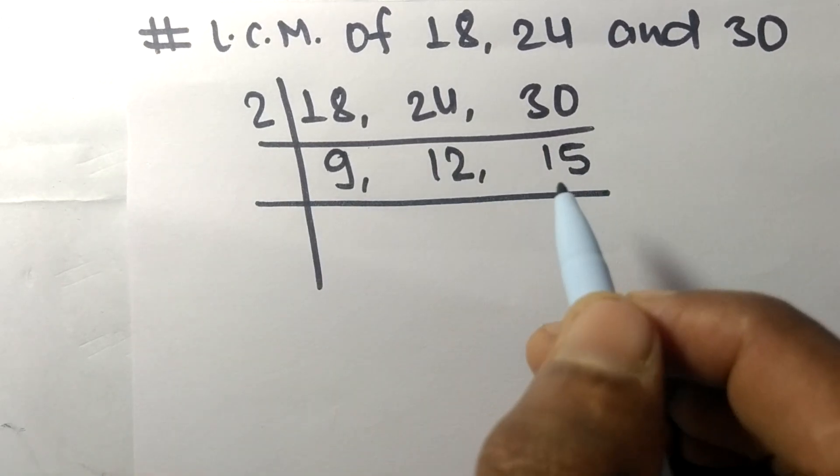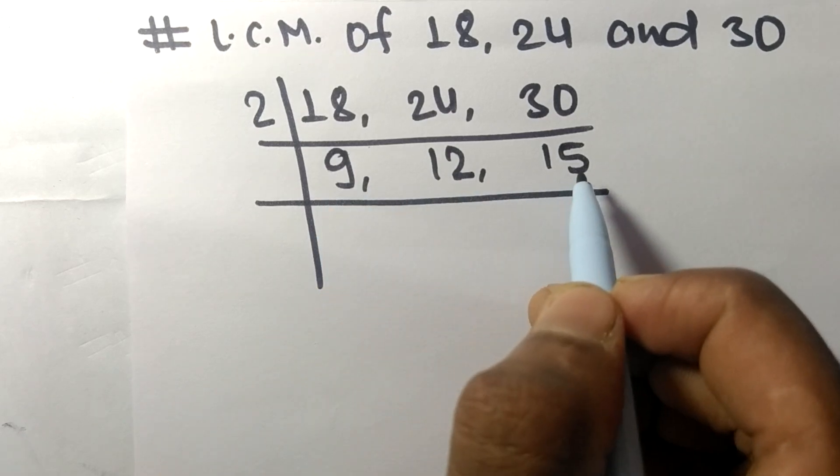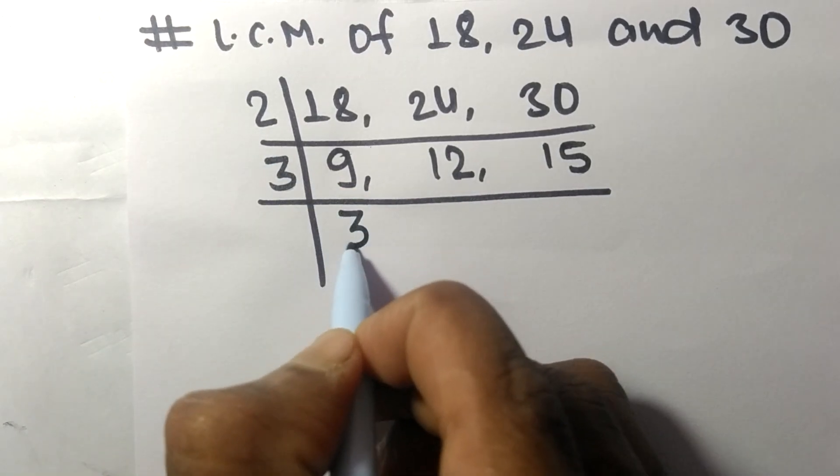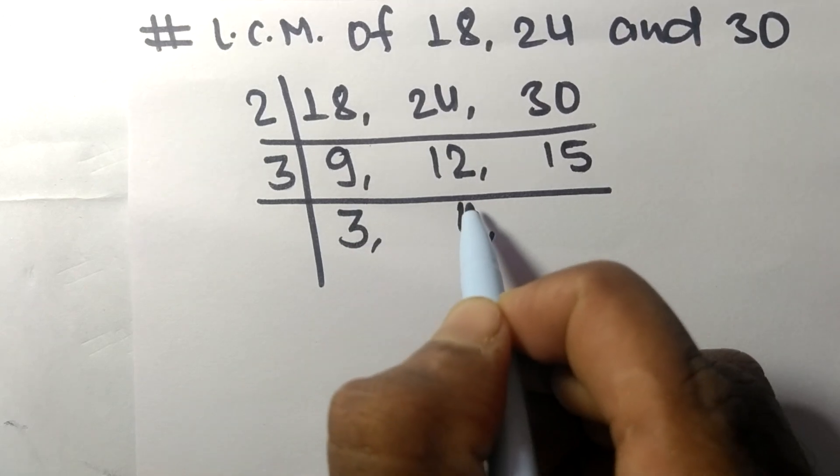Now these all numbers are divisible by 3, so 3 times 3 means 9, 3 times 4 means 12, 3 times 5 means 15.